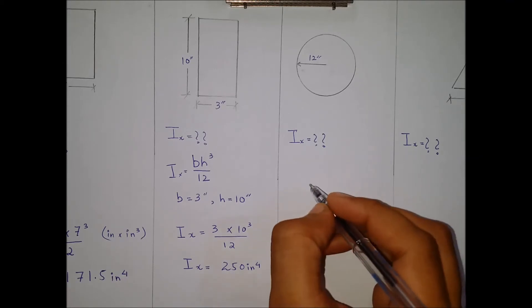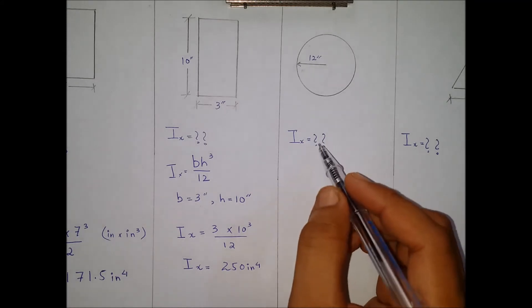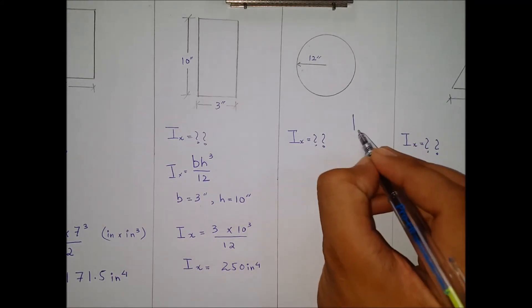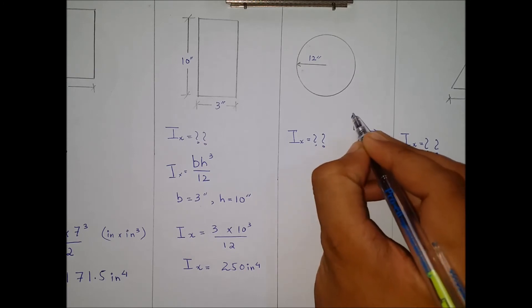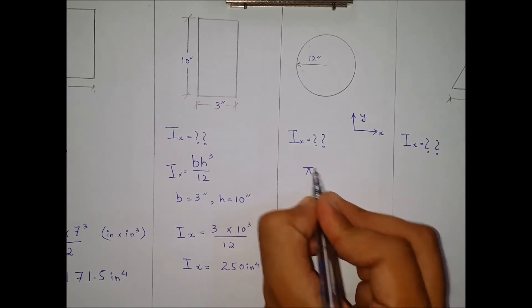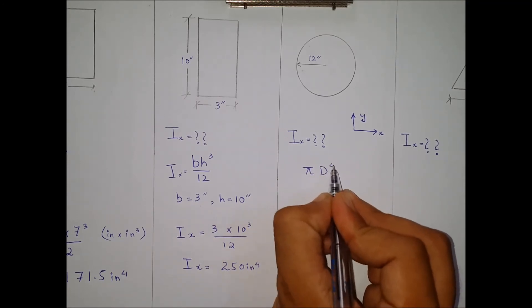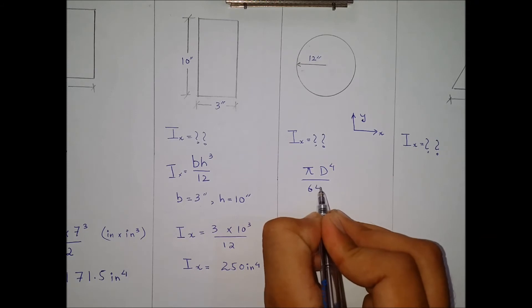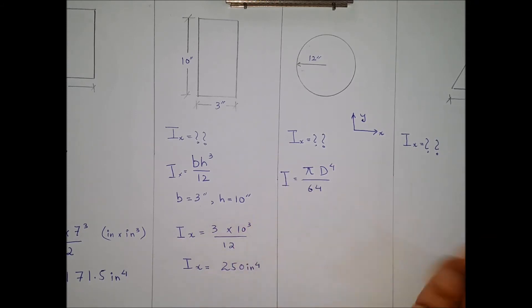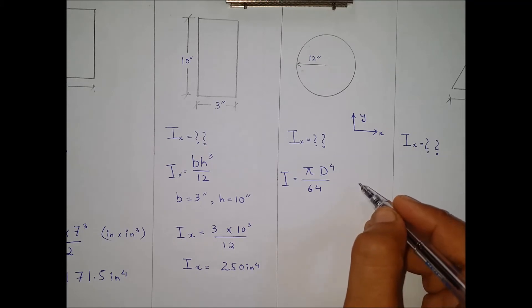Now starting with the circular example, we are required to find out moment of inertia about the x-axis. For a circle, about both axes or any other axis, the moment of inertia will remain constant since the formula is πD⁴ over 64, where D is the diameter, which is the same for Ix or Iy.